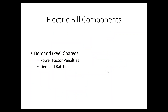Demand charges are typically composed of a couple of items. One is power factor penalties, which is a penalty for the power quality that your facility influences back to the grid — we'll cover that in another section. The other is the demand ratchet, which means that if you use a lot of power at one time and then don't use energy, they still charge you. We'll cover that in another section as well.